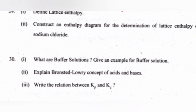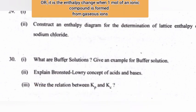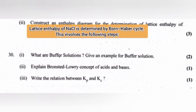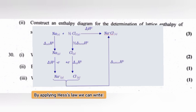Define lattice enthalpy. The lattice enthalpy of an ionic compound is the enthalpy change when one mole of an ionic compound dissociates into gaseous ions. Or, it is the enthalpy change when one mole of an ionic compound is formed from gaseous ions. Construct an enthalpy diagram for the determination of lattice enthalpy of sodium chloride: lattice enthalpy of NaCl is determined by the Born-Haber cycle. By applying Hess's law, we can write the required expression.